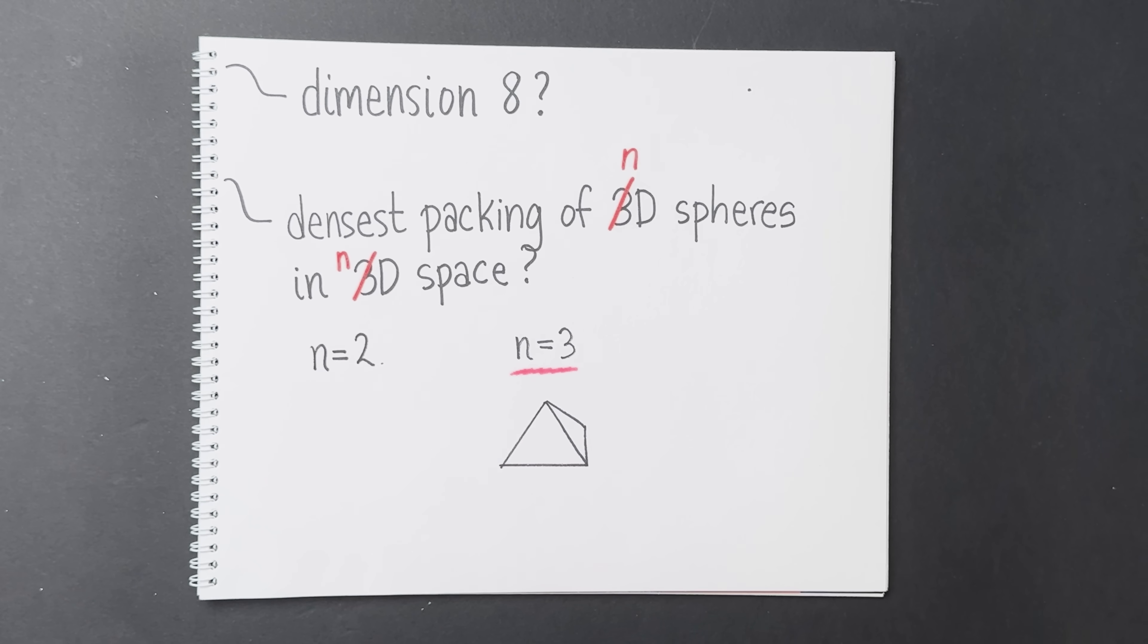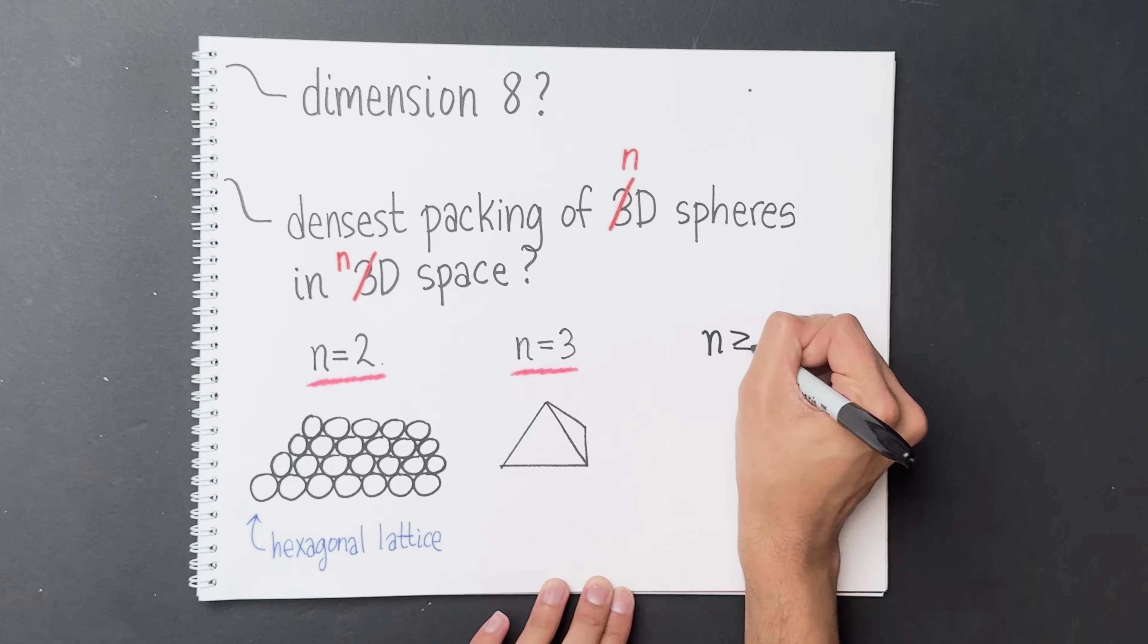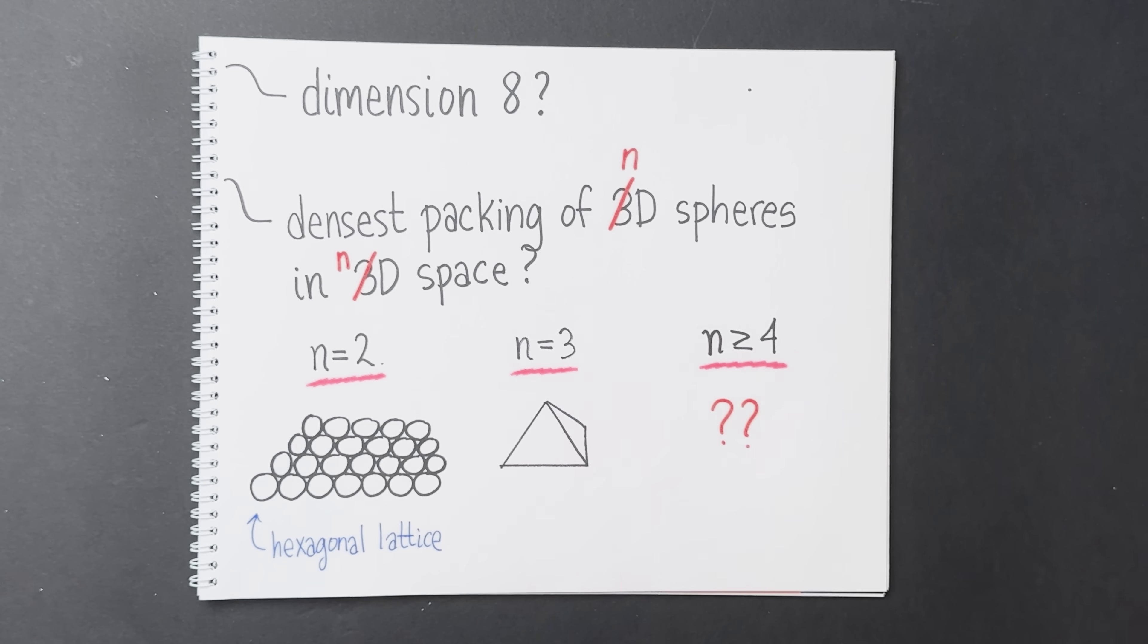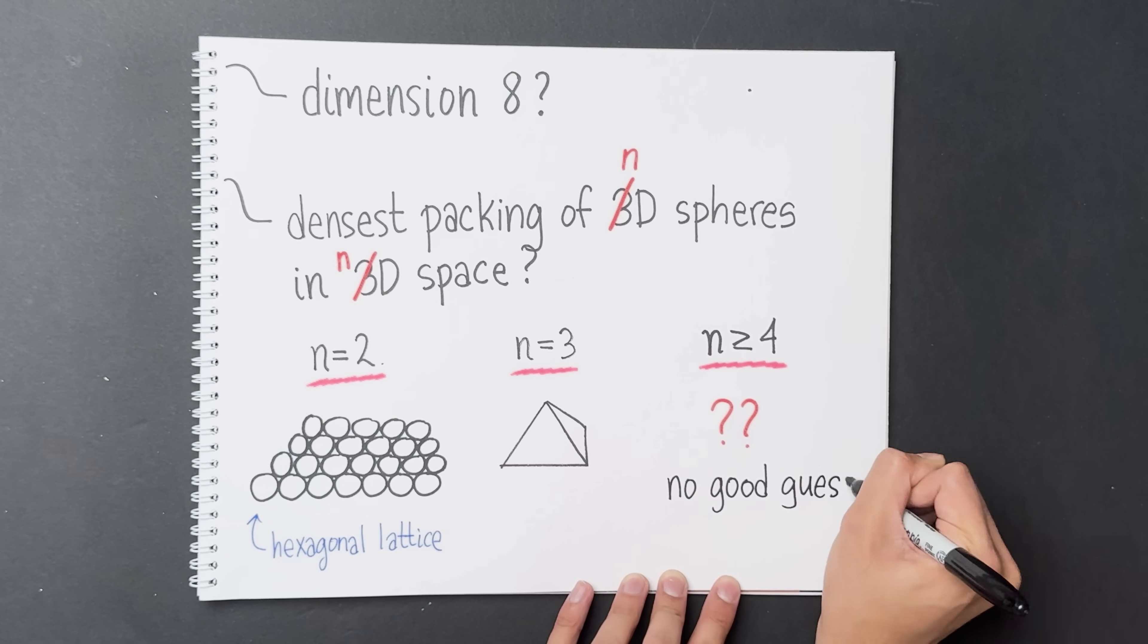For n equals 2, we're asking for the densest arrangement of circles in the plane. First, draw a line of circles. In the gaps between each of the circles, you draw a second line of circles, and so on. This is called a hexagonal lattice. But as soon as you go to 4 dimensions and beyond, we know very little. We don't even have a good guess as to what the densest packing is.